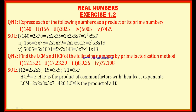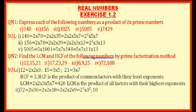Next, let us find the LCM. LCM is the product of all factors with their highest exponents. The factors of 12 are 2², 3; of 15 are 3, 5; of 21 are 3, 7. Listing all different factors: 2², 3, 5, 7. Multiplying: 4 × 3 = 12, × 5 = 60, × 7 = 420. Therefore, LCM of 12, 15, and 21 is 420.